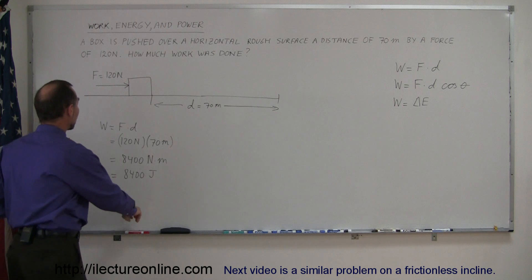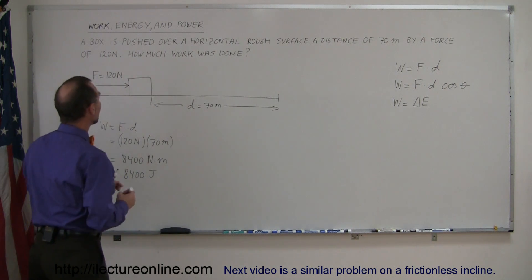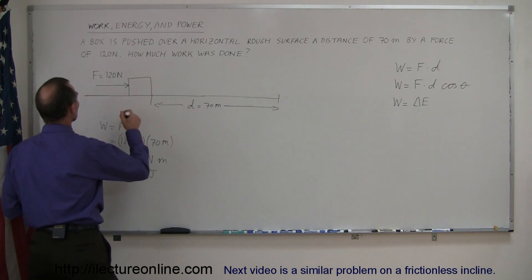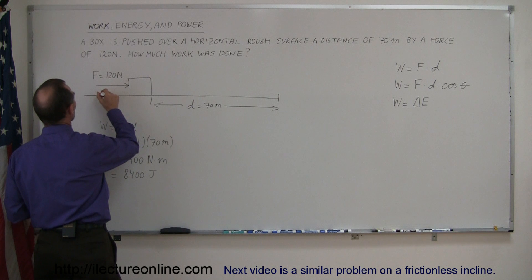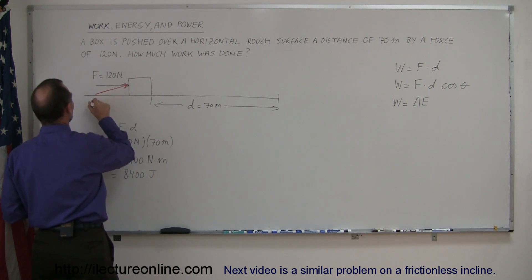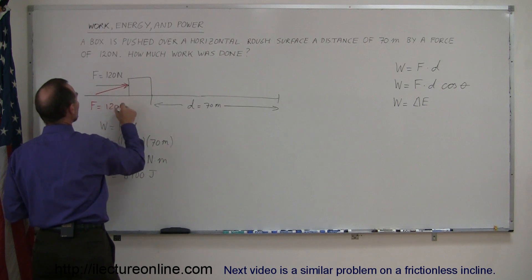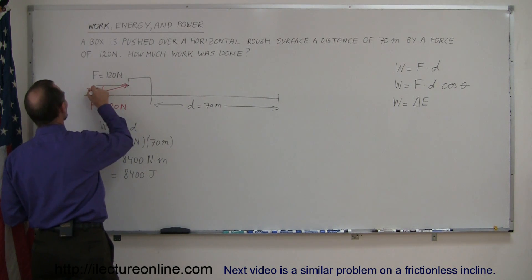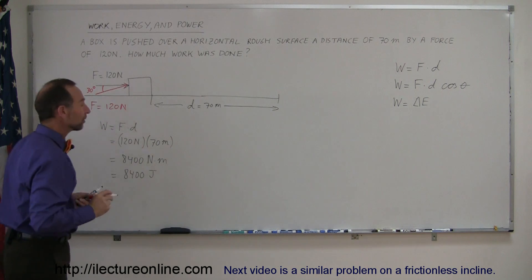Now, what if we adapted? What if instead of pushing with a force like this, we push with a force that is not horizontal. So let's say that we push with a force like this, the force is still 120 newtons, but now let's say that it makes an angle of 30 degrees with the horizontal.